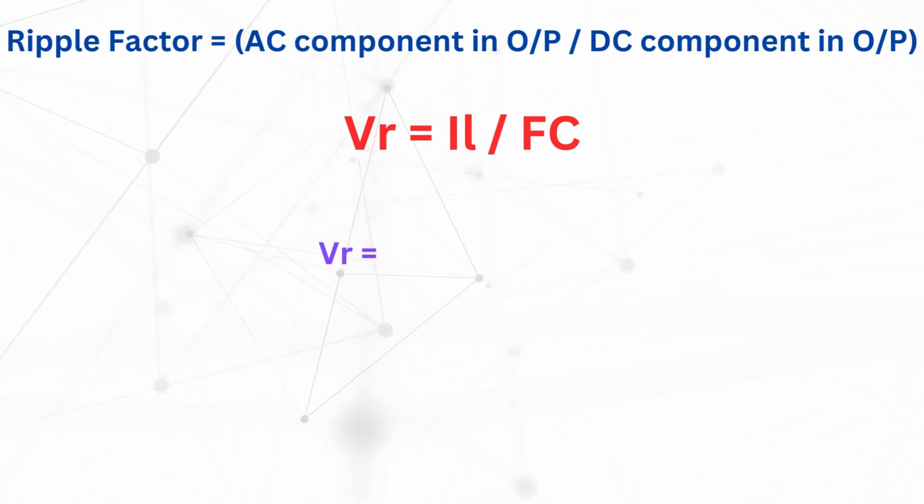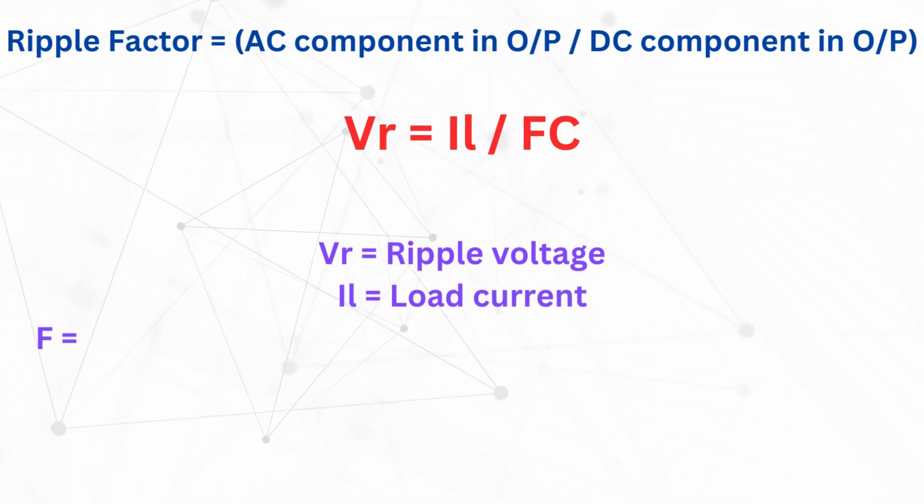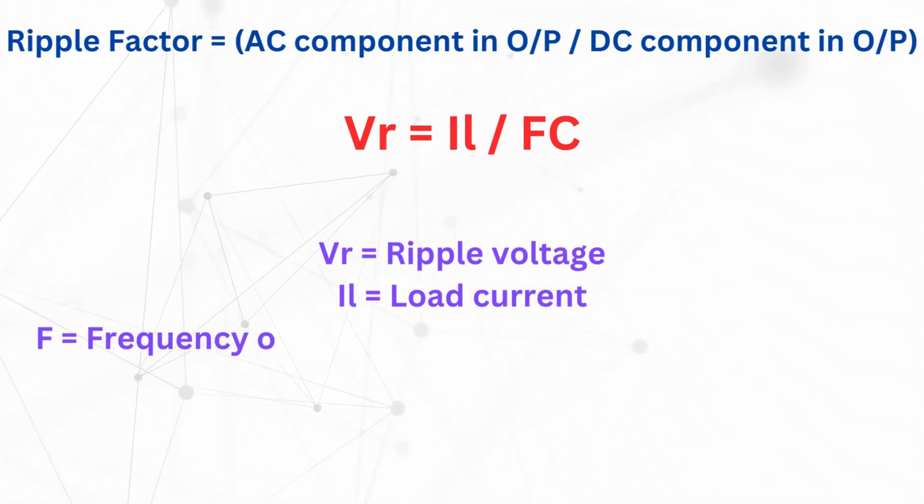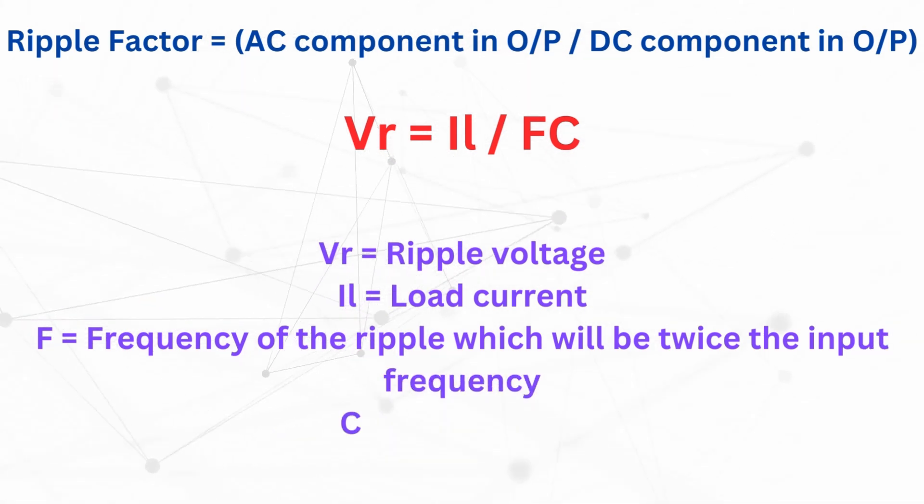In addition, the mathematical expression for the ripple voltage is given by the equation VR equal to IL by FC, where VR represents the ripple voltage, IL represents the load current, F represents the frequency of the ripple, which will be twice the input frequency, and C is the capacitance.